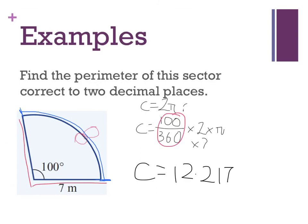So if that there is 12.217, I need the whole perimeter of the shape. I'm going to have to add another 7 for the radii and 7 for the other radii, and when I do that I'm going to come up with an answer of 26.217.